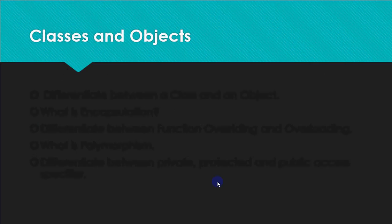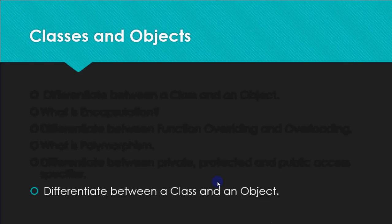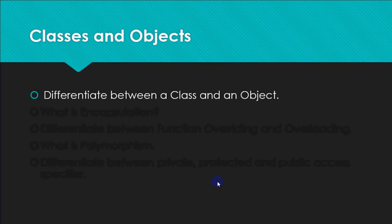Another important topic is classes and objects, and the first question is the difference between a class and an object. An object is a runtime entity which has certain features and operations to be performed on those features. For example, a pen as an object has features like color of ink and type of ink, and operations like write, refill, or discard. But pen in general is a class. A general description for similar types of objects is called a class.